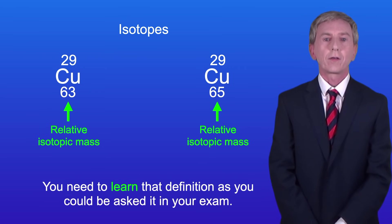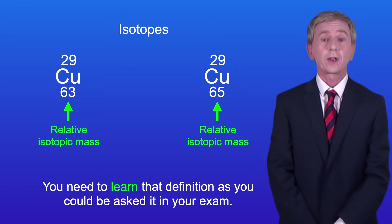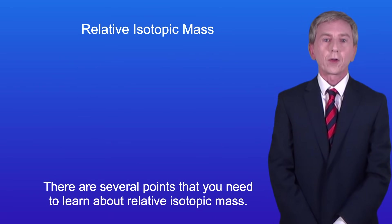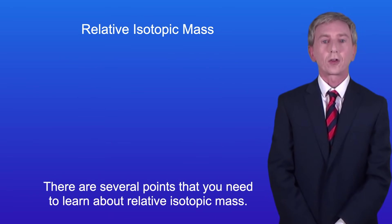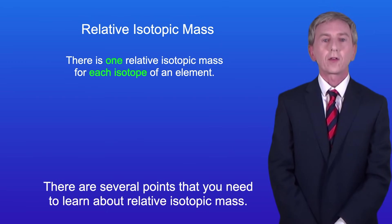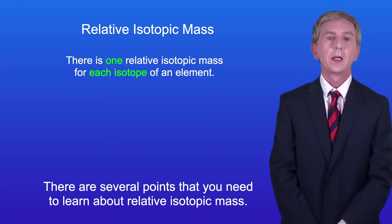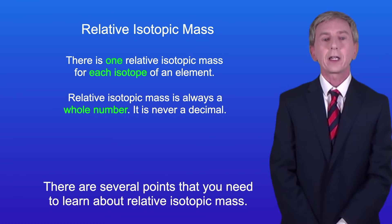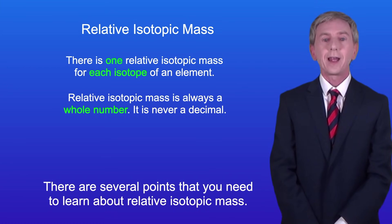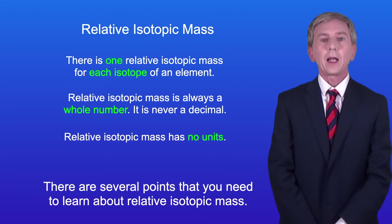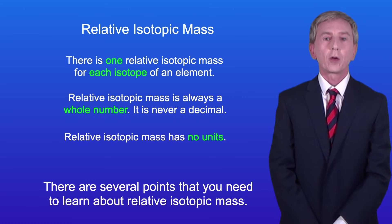You need to learn that definition as you could be asked it in your exam. There are several points you need to learn about relative isotopic mass. Firstly, there's one relative isotopic mass for each isotope of an element. Secondly, relative isotopic mass is always a whole number — it's never a decimal. And lastly, relative isotopic mass has got no units.